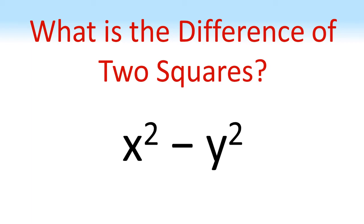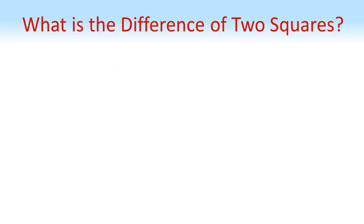What is the difference of two squares? If we take two numbers a and b and square them and find the difference, we can rewrite this equation by putting minus ab and plus ab in the middle.